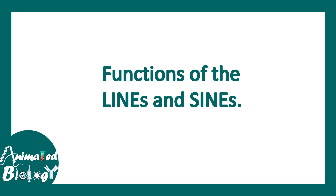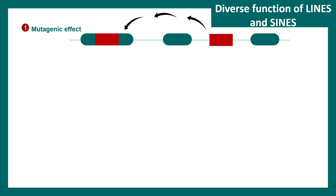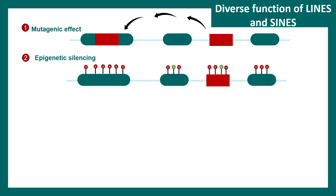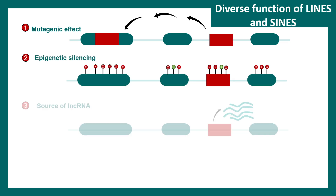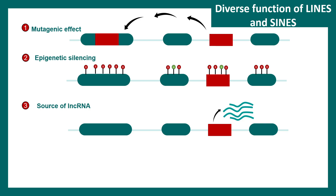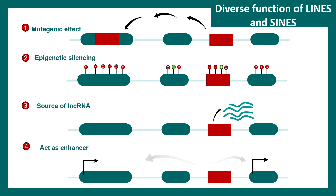So let's talk about the functions of LINEs and SINEs. Like any other transposons, they can regulate a plethora of things. They can have a mutagenic effect — they can hop into a particular ORF of a gene and disrupt that gene. There could also be epigenetic silencing of a particular gene. LINEs can also be a site for long non-coding RNA. Recent research suggests they can also act like enhancers, thereby regulating gene expression. Especially, SINEs are known for their roles in modulating gene expression.